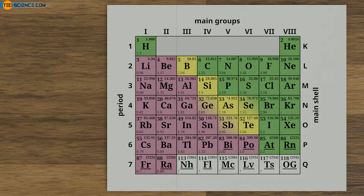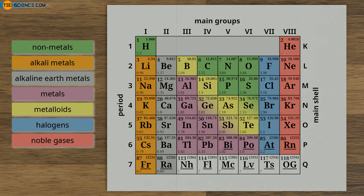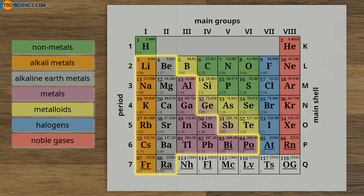A more detailed classification than the mere categorization into metals and non-metals can be made using chemical behavior, which is mainly determined by the number of outer electrons and thus by the group number. This classification is usually done into non-metals, alkali metals, alkaline earth metals, metals, metalloids, halogens, and noble gases. Note that alkali metals and alkaline earth metals are metals in the true sense. The properties of each classification are discussed in more detail in the following.